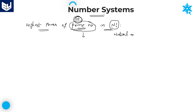If a prime number is given directly, we don't have any problem. But in case the number given is not a prime number, you need to convert that particular number into prime factors. For example, 10 equals 2 into 5. And if 8 is given, 8 is not a prime number — you need to write it as 2 cubed. So whatever number is mentioned, if it is not prime, convert it into prime factors.